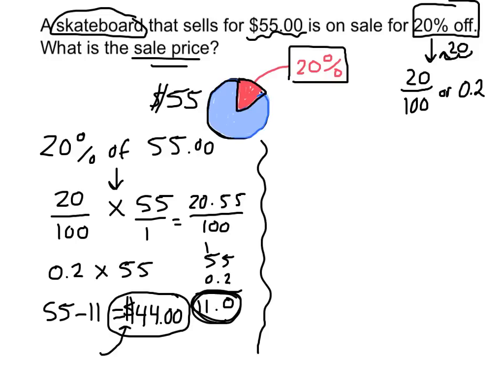So if I'm not going to pay for 20% of the skateboard, then how much of the skateboard am I going to pay for? I'm going to pay for 80% of the skateboard. I'm not paying for 20% of it, so I'm paying for 80% of it. So another good way to find the sale price of an item is to multiply the price of the item by the amount you actually have to pay for. If something's 20% off, I'm going to pay for 80% of it. If I do 80% times 55, 0.8 times 55,